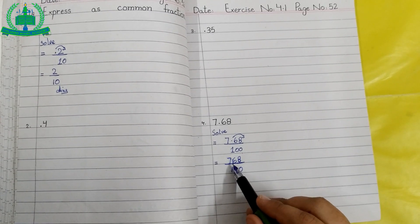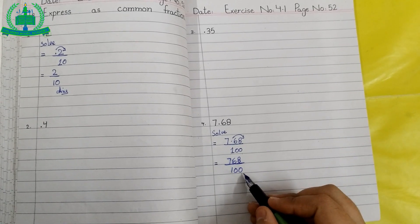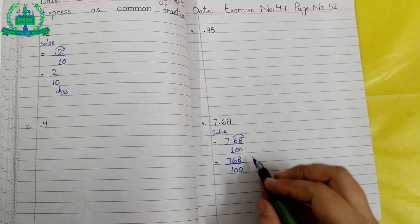So we write 768 upon 100. This is common fraction and this is the answer.